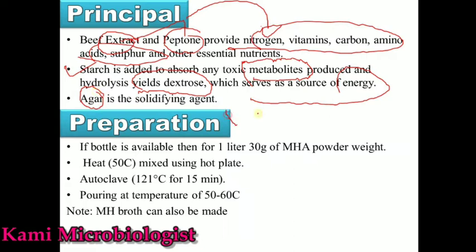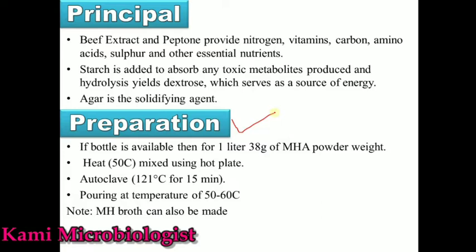To prepare this media: if the bottle is available, weigh 38 grams of Mueller Hinton media powder using a weight balance, then mix it into 1 liter of distilled water. Heat-mix using a hot plate at 50°C, then autoclave the media at 121°C for 15 minutes. After autoclaving, pour the media into Petri plates if it is agar, or into test tubes if it is broth, when the temperature reaches 50 to 60°C.